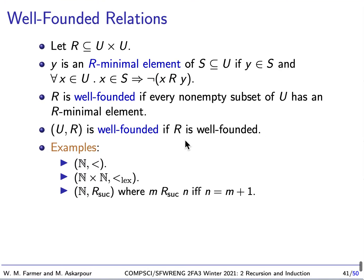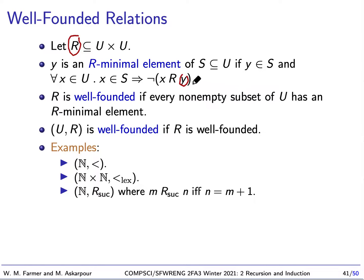So let's talk about what a well-founded relation is. Let R be a relation on U. We can say that an R-minimum element of a set is some member of that set — Y here — such that there is no member that's related to that set. So there's no X that's related to Y. In some sense, Y is minimal; nothing else is related by this relation.